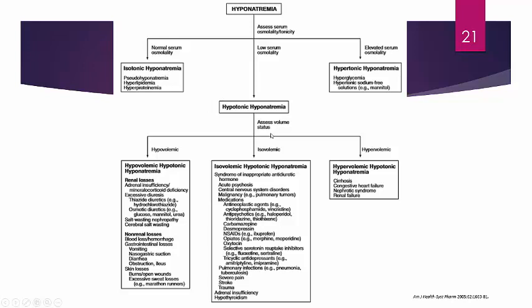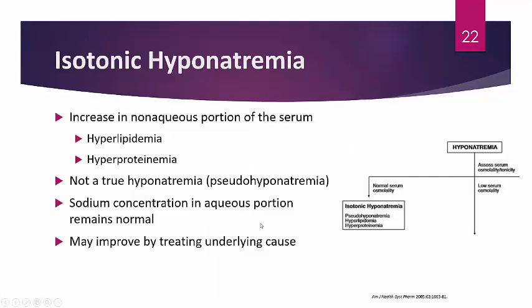Hypotonic hyponatremia with a tonicity less than 270 requires you to assess volume status — hypovolemic, isovolemic, or hypervolemic. This is the most common type you will see in practice. Always assess volume status when you have hypotonic hyponatremia.